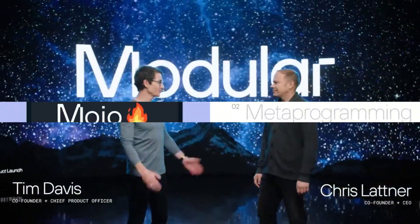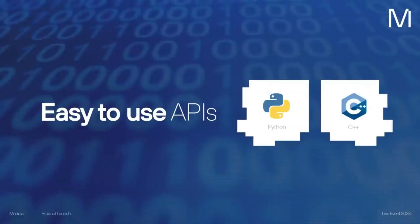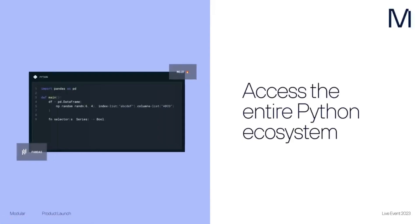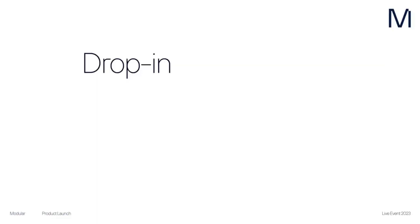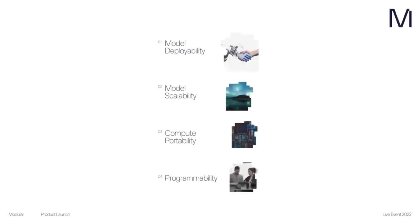Recently, a new programming language called Mojo was launched, which aims to combine the usability of Python with the performance of C, allowing low-level artificial intelligence hardware programming in AI model extensibility. With Mojo, developers can write everything in a single language, without the need for C++ or CUDA, and program a variety of low-level AI hardware.